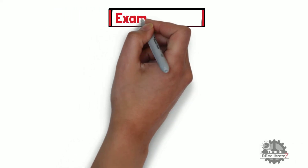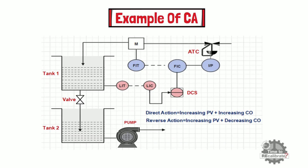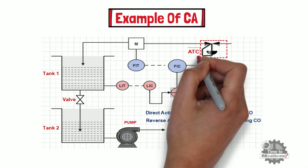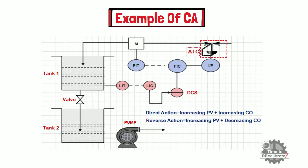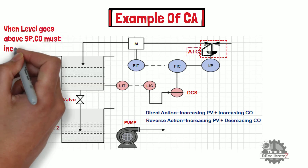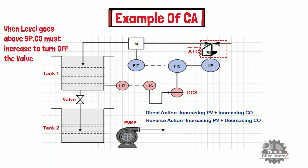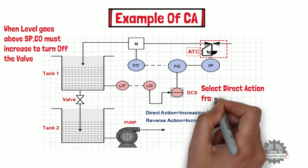Now let's understand the controller action concept by taking one example. As you can see from the picture, in this example the flow control valve is installed at the input side of the process, and an air-to-close control valve is used to control the flow. When the level goes above set point in tank 1, the controller output must increase to turn off the valve. In other words, when the level in tank 1 rises above the set point, to correct the error the controller output must increase. Hence, direct action needs to be selected from the controller.